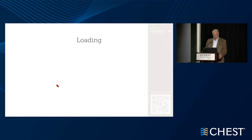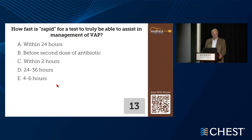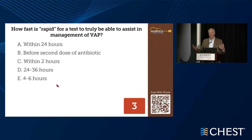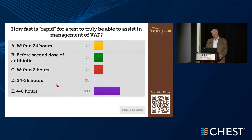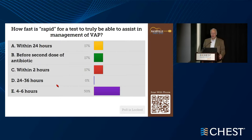An audience poll: what would you consider 'rapid' — within 24 hours, before the second dose of antibiotics, within 2 hours, 24 to 36 hours, or 4 to 6 hours? The only clearly incorrect answer was 24 to 36 hours, and nobody chose that. Before the next dose of antibiotics, within 2 hours, and 4 to 6 hours are all roughly equivalent — you want to start empiric therapy but get the right answer as soon as possible.